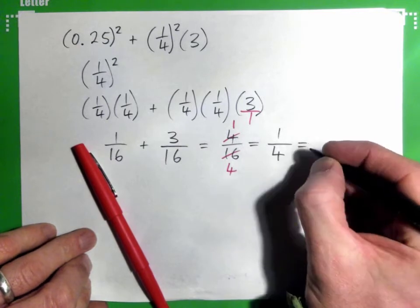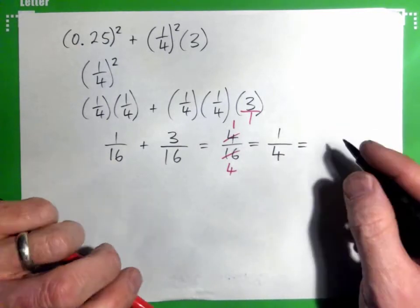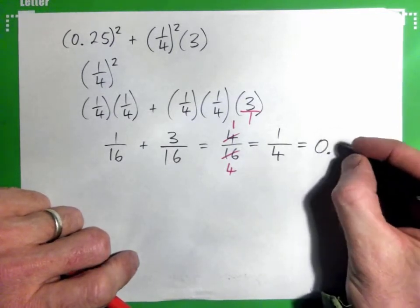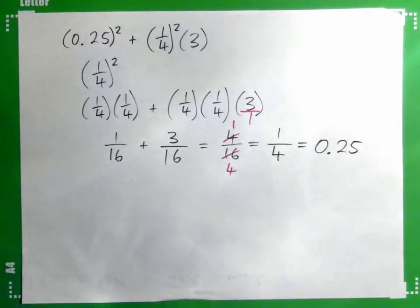Now, it says to give the answer as a decimal. What's a quarter? What's a quarter as a decimal? Right. Now, again, we didn't have to do it that way.